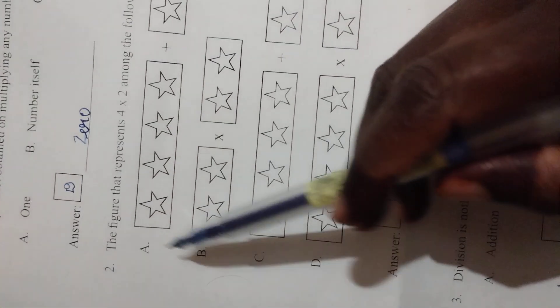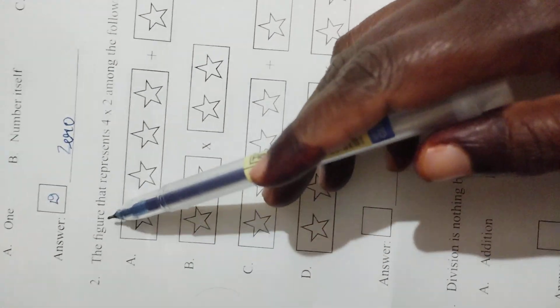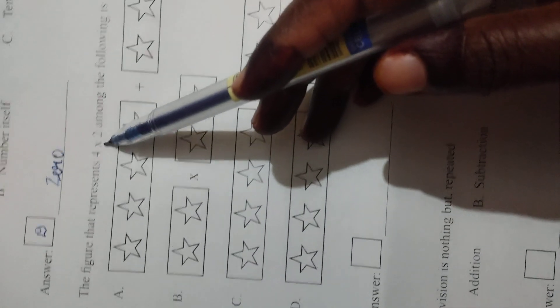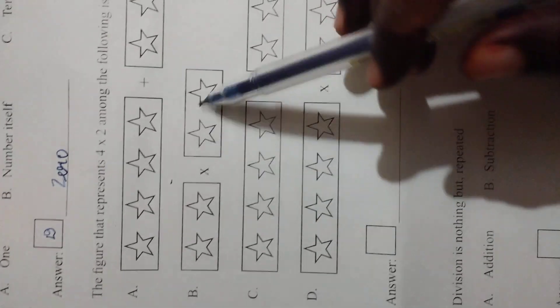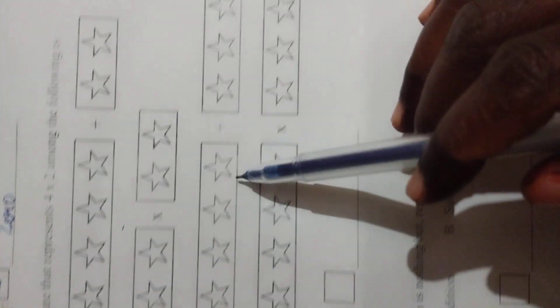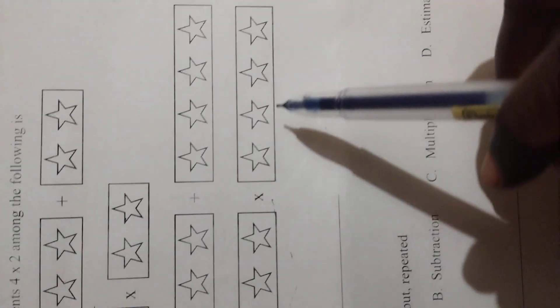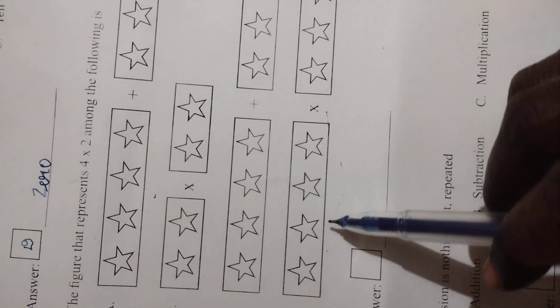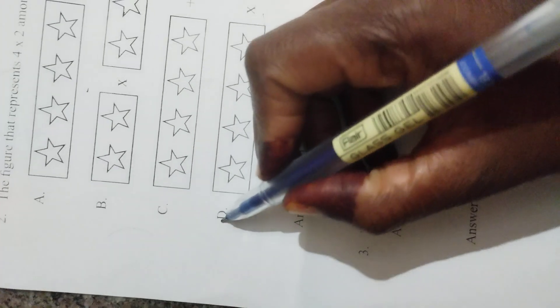Next, the figure that represents 4 into 2 among the following is - you want to search symbols and numbers. Here are 4 stars plus 2 stars, this is not the answer. Here 4 into 4, we don't know. Next 4 plus 4, no. 4 into 4, 4 times 2, 8. We need 8 stars, 4 times 2. So answer is D, you can write here D.